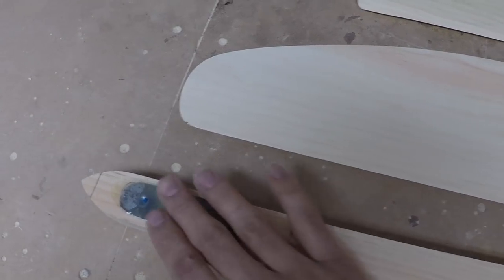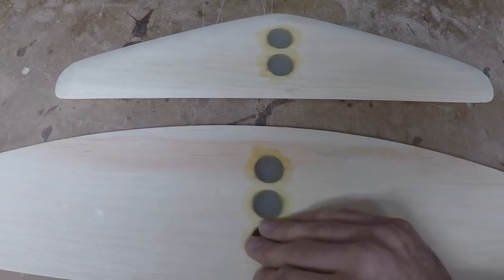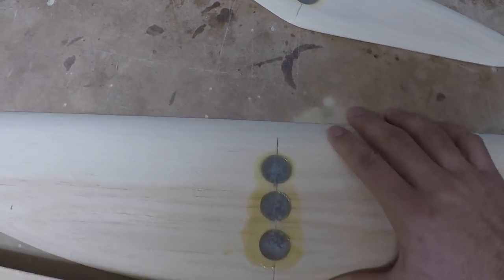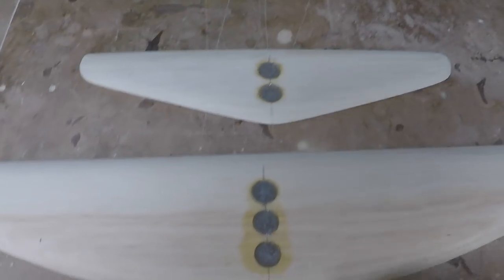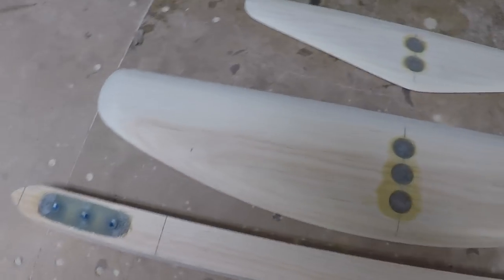Alright, so everything has cured. It's looking pretty good, this is the bottom side, nice and flat. This is the top side. Now I'm just going to give all these surfaces a nice sand and then that's it. It's ready to be fiberglassed.